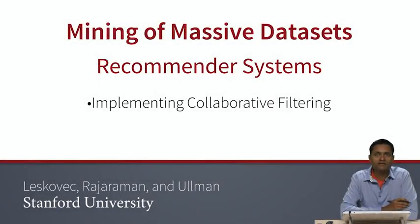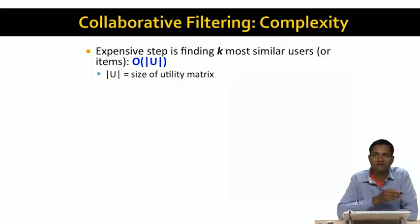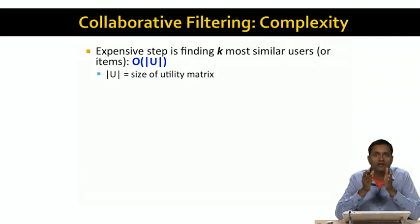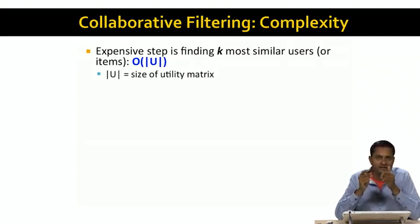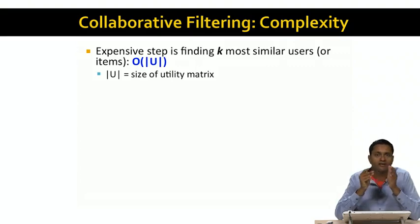Now, let's turn to the task of actually implementing collaborative filtering and look at the complexity of the implementation. The most expensive step is finding the k most similar users or the k most similar items — the neighborhood of an item or a user. To find the k most similar items, we take the item and compute its similarity with respect to every other item, for example using a cosine or centered cosine distance. If we did this at every step, we'd have to look at every entry in the utility matrix, so the complexity is the size of the utility matrix U.